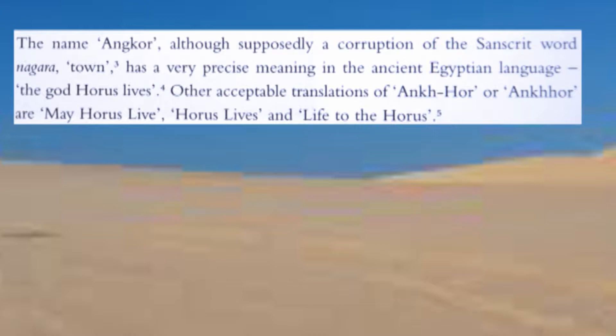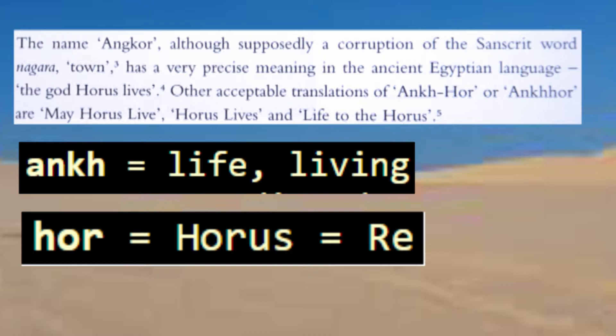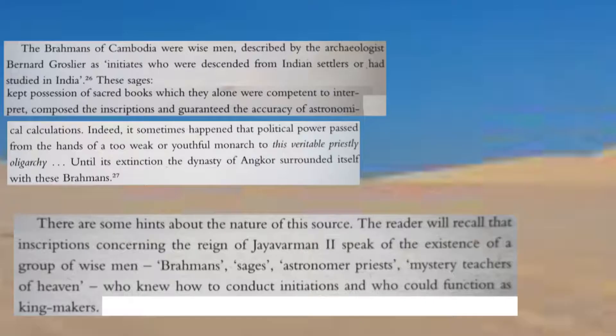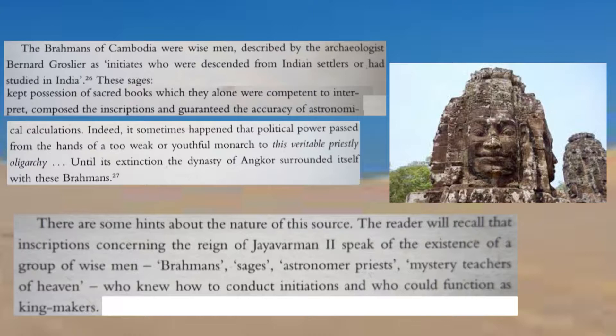In Cambodia, Angkor in Egyptian means where God Horus lives. The word combination Ankh-Hor may also be translated as may God Horus live, Horus lives, or life be in Horus. Inscriptions concerning the reign of Jayavarman II speak of the existence of a group of wise men or astronomer priests. This is the same as in Egypt.